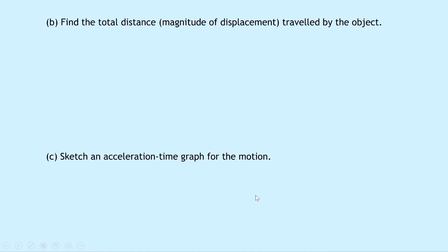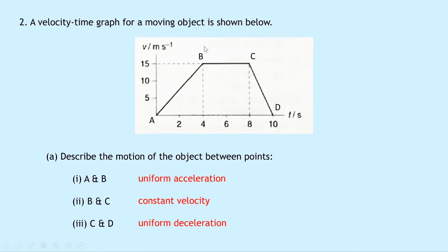Part B says to find the total distance — the magnitude of displacement travelled by the object — so we don't need a direction, just a total distance. To find distance or magnitude of displacement from a velocity time graph, we need to calculate the area under the graph, or the area between the x-axis and the line. Distance equals the area under the velocity time graph, and looking at the picture we have three different shapes already split up for us.